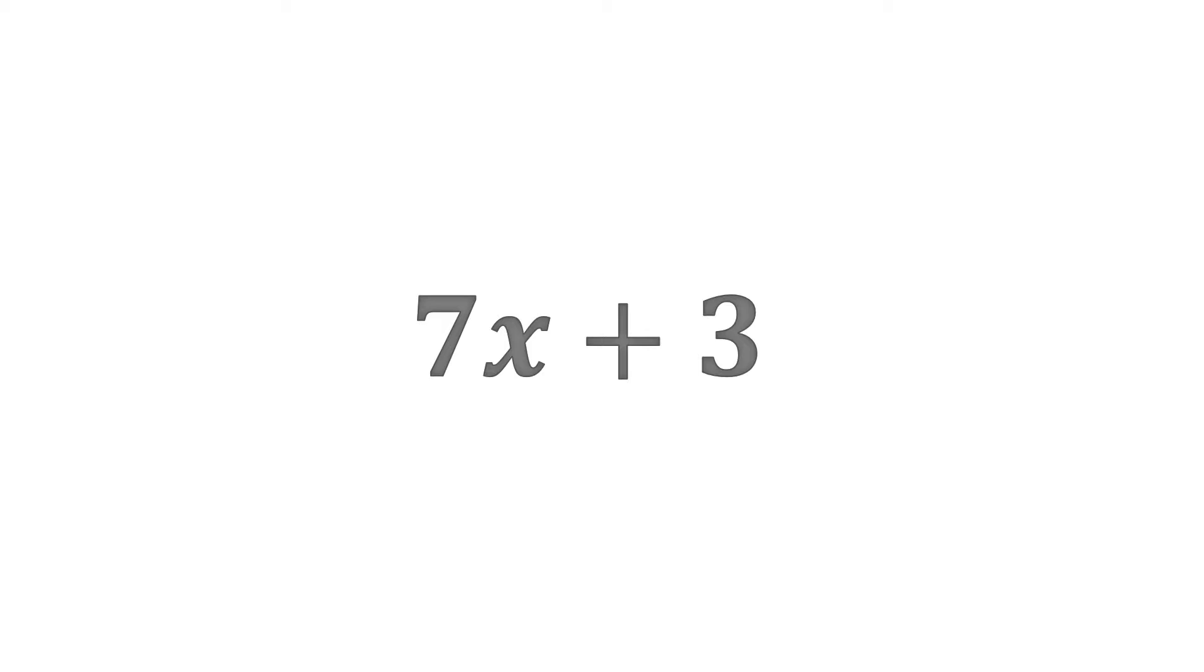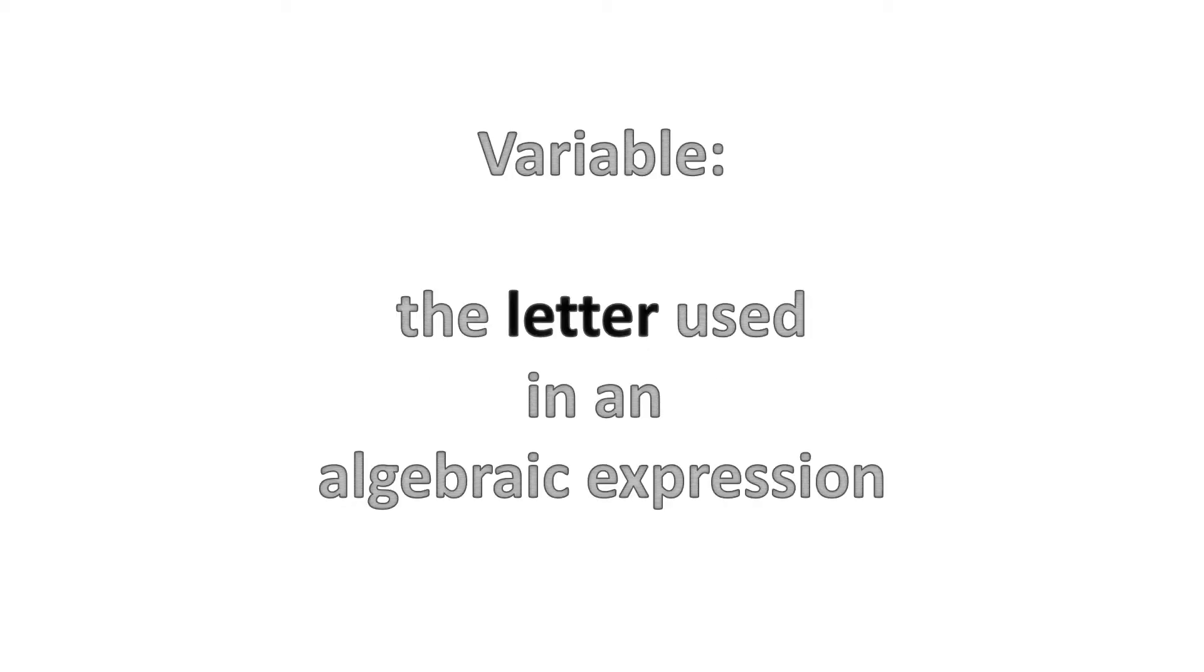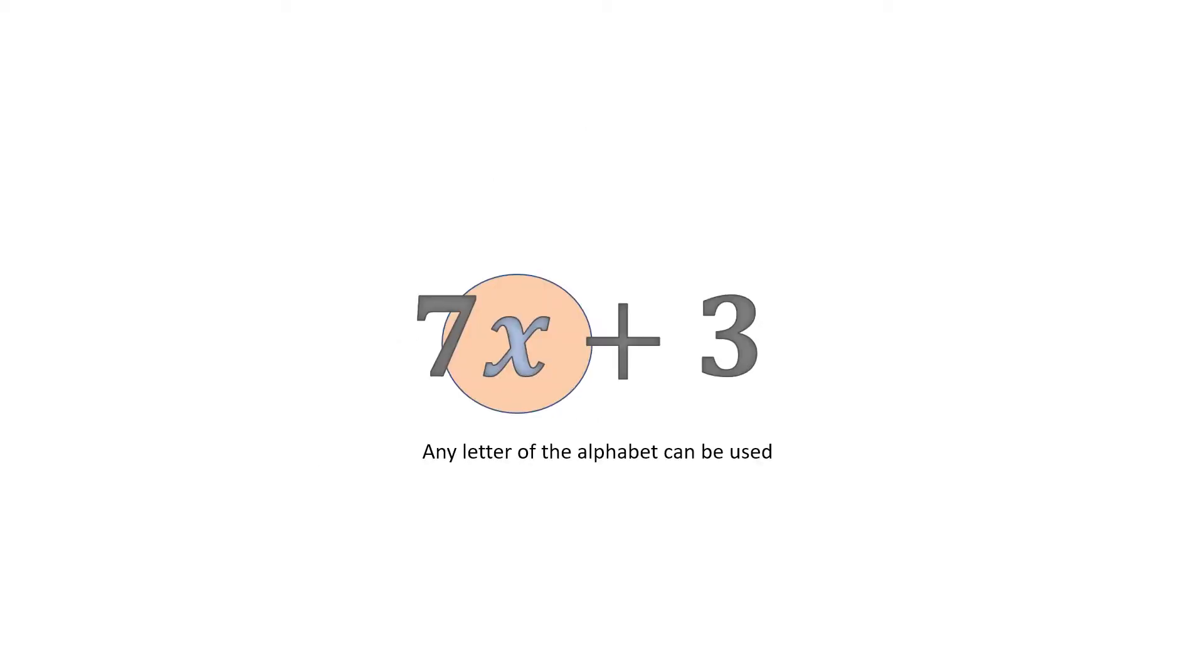The next important term is called a variable. Now what is a variable? A variable is the letter used in an algebraic expression. Let's, for example, take again the algebraic expression 7x plus 3. Then we'll see that the x that comes after the 7 is what is called a variable, and that is any letter of the alphabet that can be used. So 7x plus 3, the variable in this expression is x.